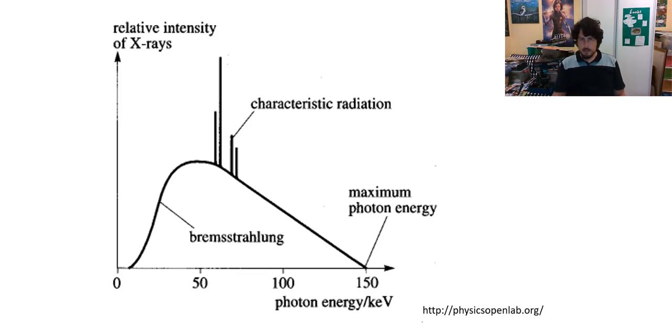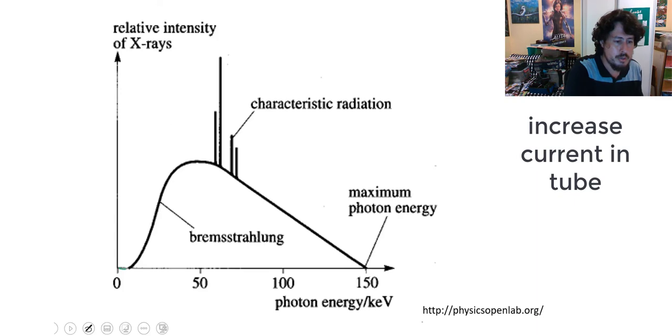So what we do is we increase the current going across the tube, the amount of electrons that are being released by the cathode and flying towards the anode. And that's going to have a specific alteration to the graph.